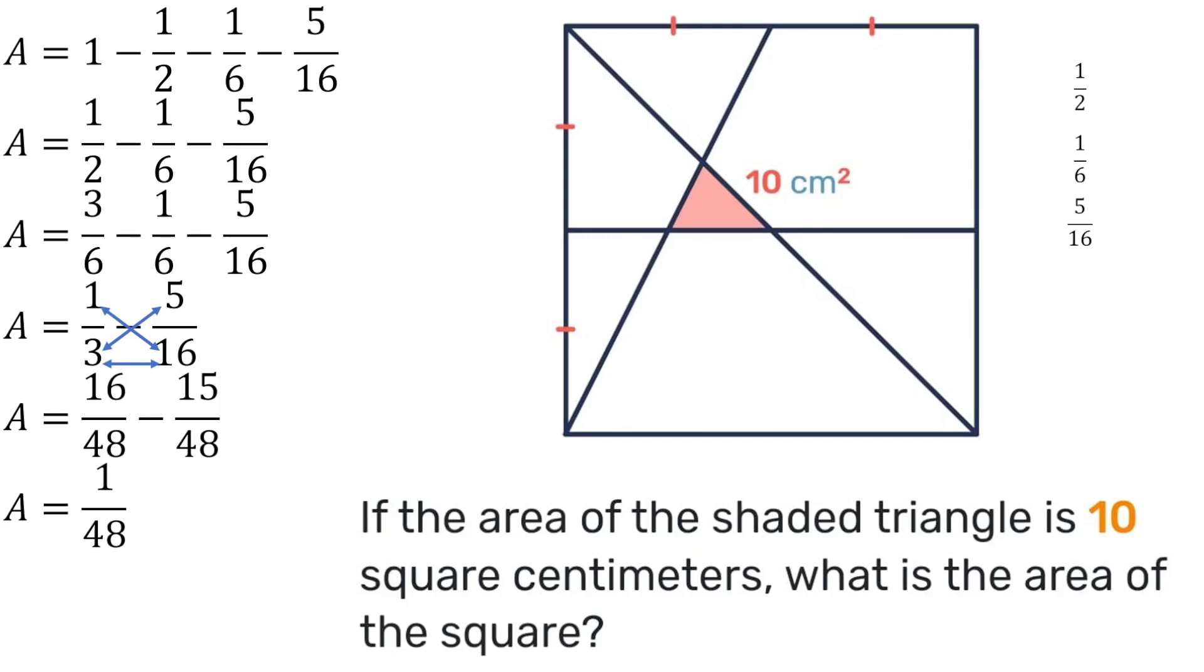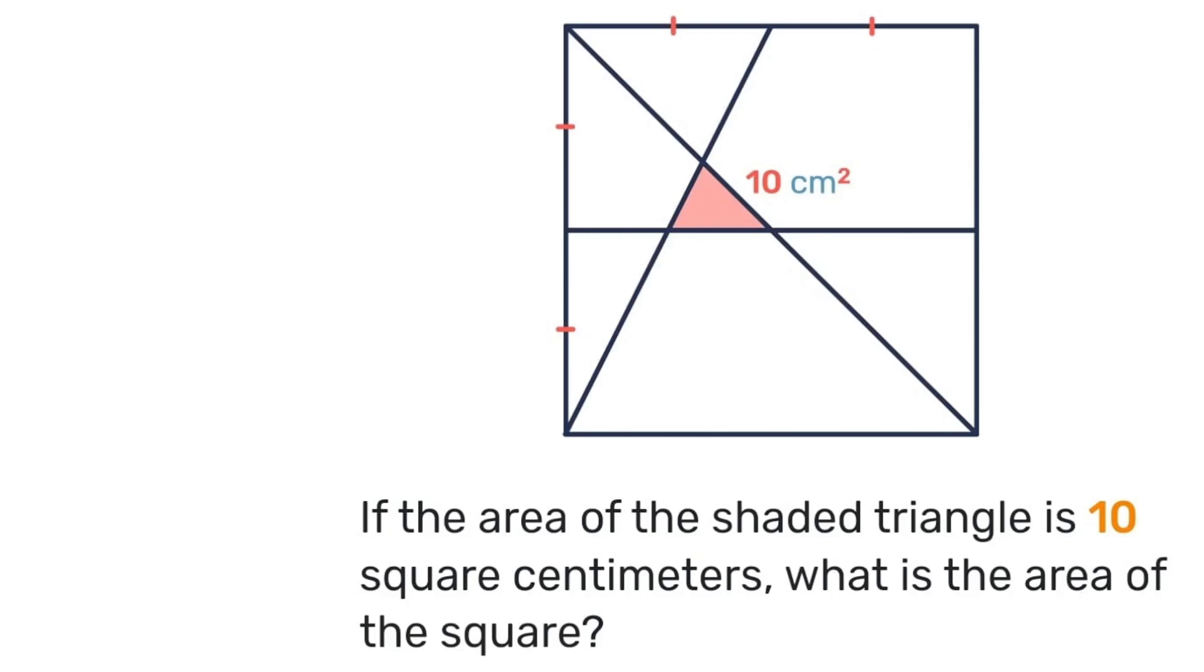Or in other words we can say that the area of the triangle is just one unit and the entire square is the complete 48 units. So we can set up a ratio where we have that one corresponds to 10 square centimeters, how much does the 48 correspond to? So technically we can find that by cross multiplying, 48 times 10 square centimeters and dividing it by one. So we get that the area is 480 square centimeters.